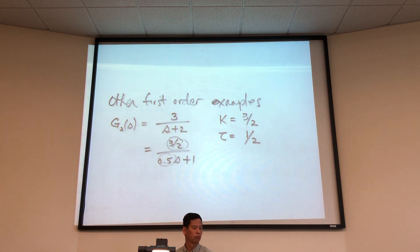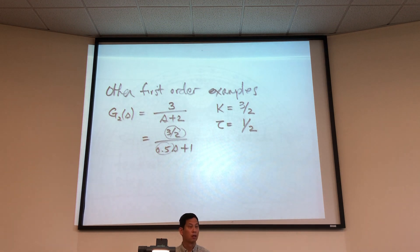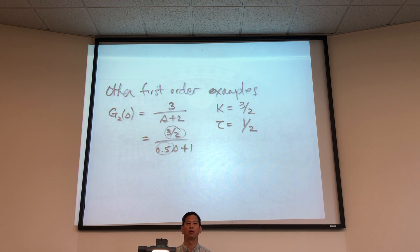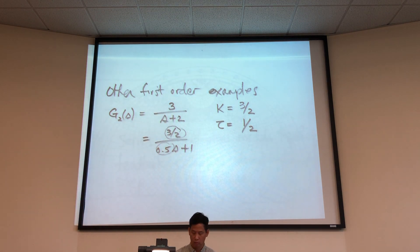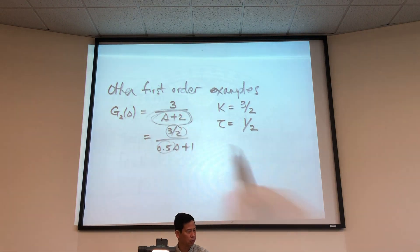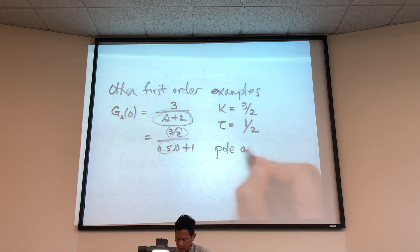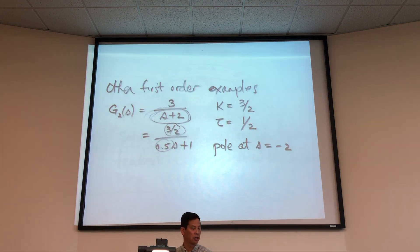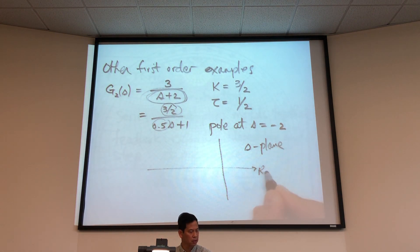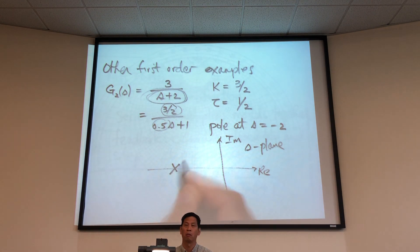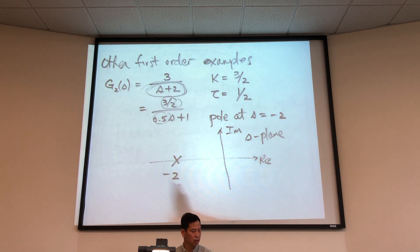This system has a pole at S equals negative 2. Sketching in the S-plane with real and imaginary axes, the pole is at minus 2. This number is related to τ: the pole location equals minus 1 over τ. The DC gain K is 3 over 2, obtained by setting S to zero in the transfer function — that's a quick trick without doing full algebra.